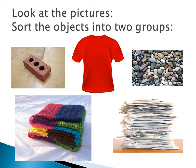Look at this picture. I will give you this picture and we are going to put them into two groups. We have here a brick, a shirt, pebbles — which are a kind of rock — a scarf made of wool, and paper. Can you put them into two groups? The brick is hard, heavy, and rough. The shirt is soft, smooth, and flexible.